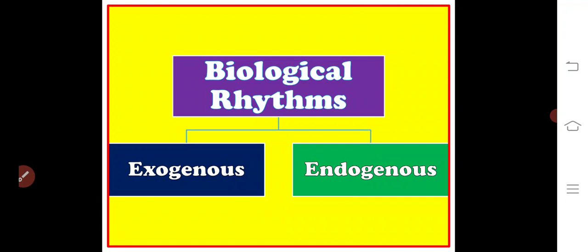An example of an exogenous biological rhythm is the hopping of sparrows on a perch when a light is turned on. Such rhythms are said to have a geophysical counterpart with the presence of light.